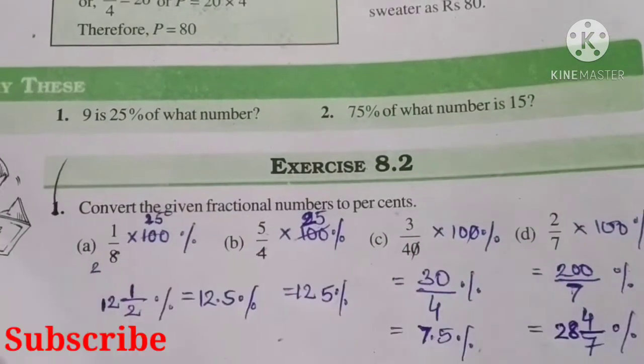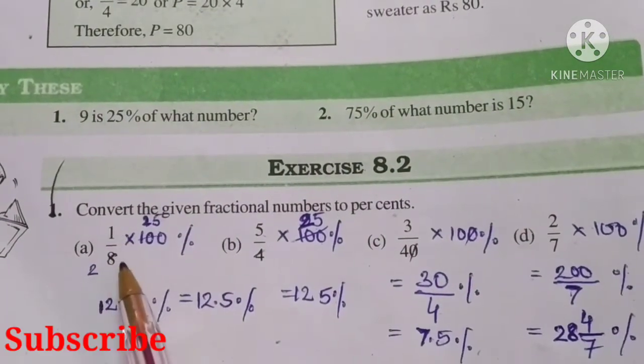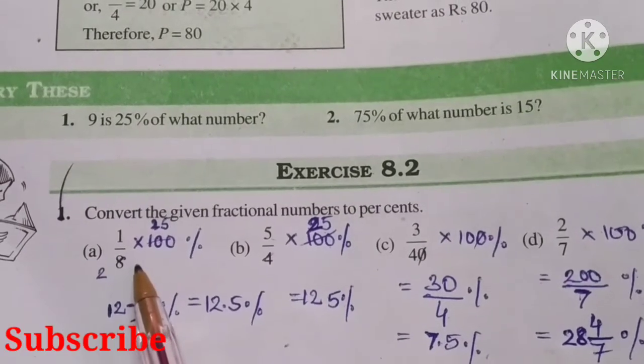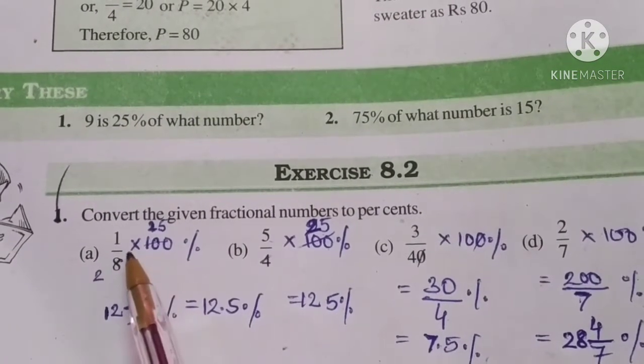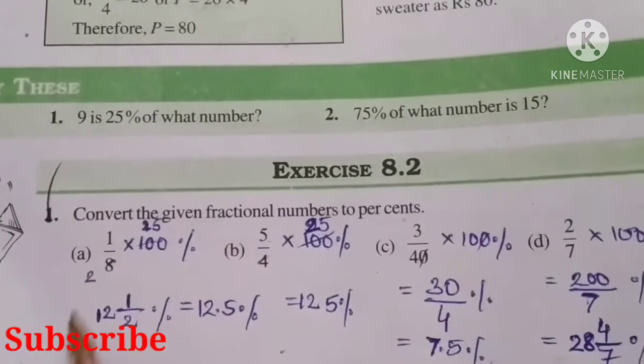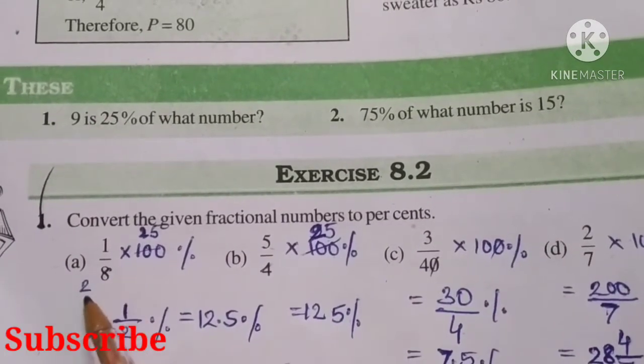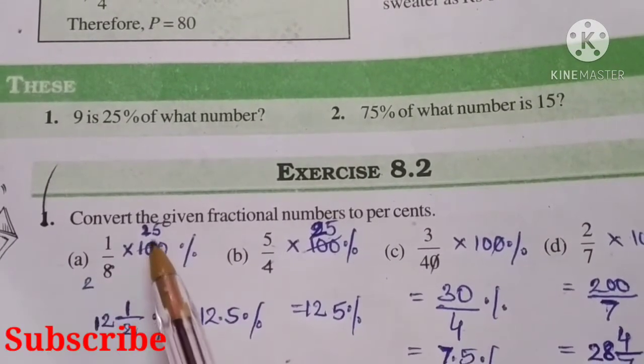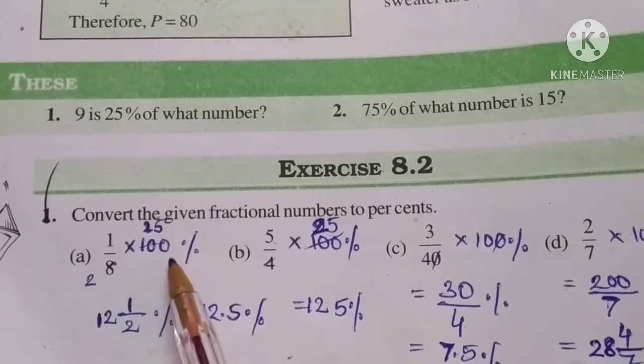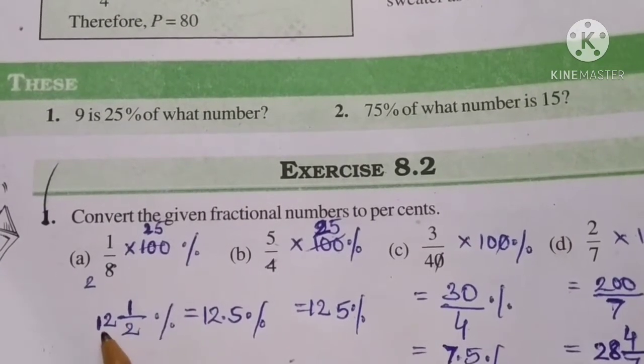Part (a): 1/8. We have to change it to percent, so multiply by 100 percent. We will get 100/8, which equals 12 and 1/2 percent.